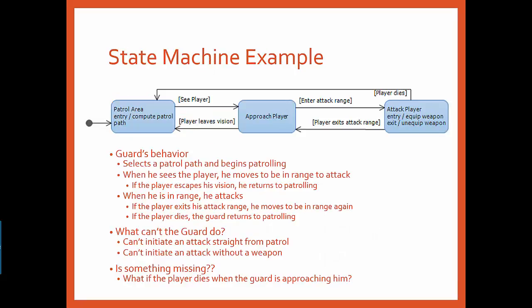Let's look at a simple guard. I've used Visual Studio's activity diagram, so the visuals are slightly different, but that's okay. At the beginning of the game, the guard begins to patrol an area. At the beginning of his patrol action, he computes a patrol path and then patrols along that path.